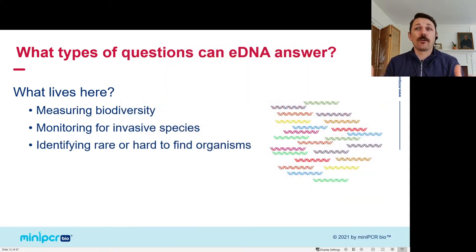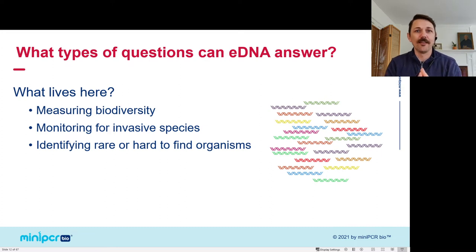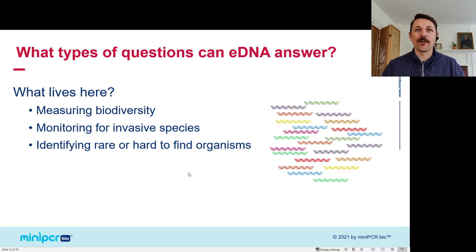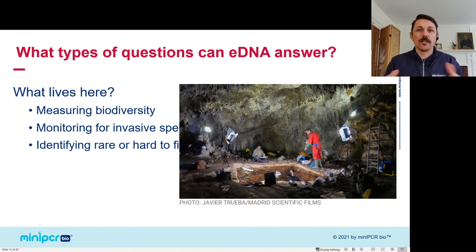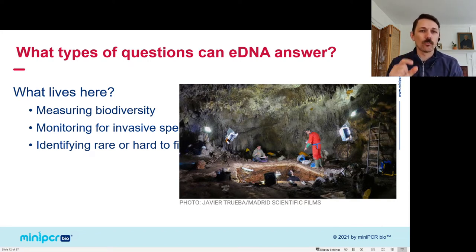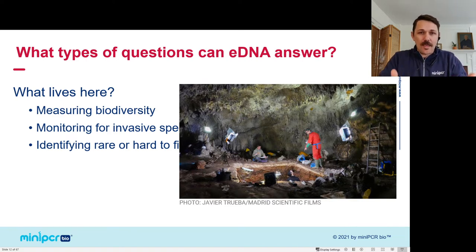eDNA is also useful for identifying rare or hard-to-find organisms. If your study organism is a nocturnal cave salamander, you can go swab the environment and find out if it's there. An even more striking example: researchers are now excavating soil to get Neanderthal DNA directly from the soil. We can learn about their genetics and where they lived without ever finding physical evidence you can hold in your hands.